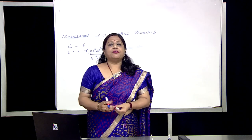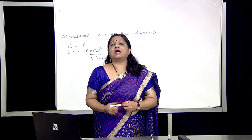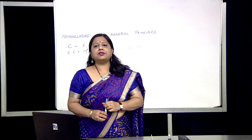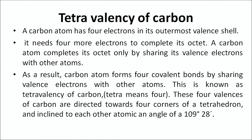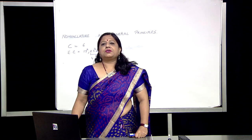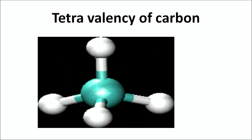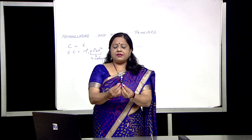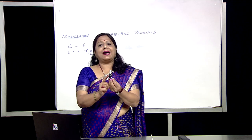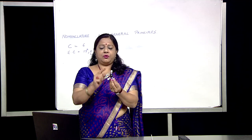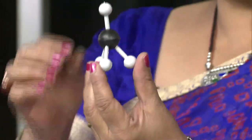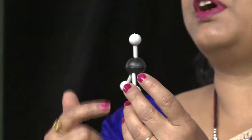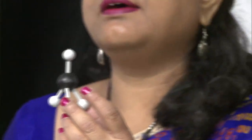Tetra means four. These four valencies of carbon are directed towards the four corners of a regular tetrahedron, inclined to each other at a bond angle of 109 degrees 28 minutes. This is the structure you can see, and here is the model which shows that in the center you have a carbon — the black ball is carbon — and the four hydrogen atoms are around it, forming a regular tetrahedron with an angle of 109 degrees 28 minutes.